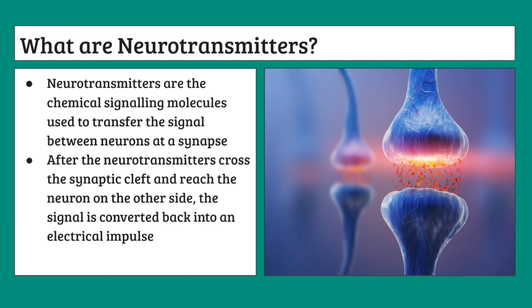After the neurotransmitters cross the synaptic cleft and reach the neuron on the other side, they're converted back into an electrical impulse — they don't stay as neurotransmitters. Neurotransmitters are only necessary when crossing the synaptic cleft. As we can see in the image, those little orange molecules between the two neurons in the synaptic cleft are the neurotransmitters transferring the information from one neuron to the other.